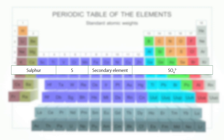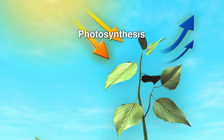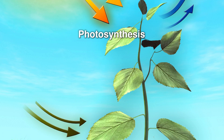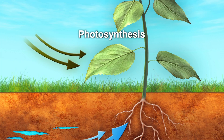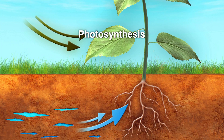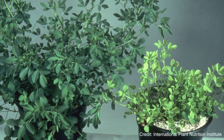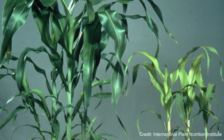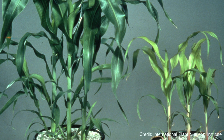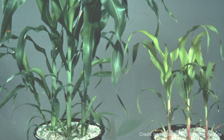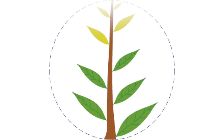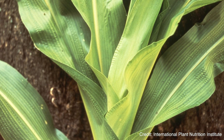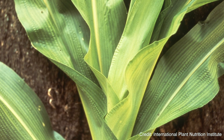Similar to nitrogen, sulfur is an essential component of proteins and is required for enzymes associated with photosynthesis. Therefore, similar to nitrogen deficiency, the leaves of sulfur-deficient plants are also often yellow. However, since sulfur-deficient plants are unable to redistribute sulfur from old leaves to new leaves, sulfur deficiency shows up as yellowing of younger leaves instead of older leaves.